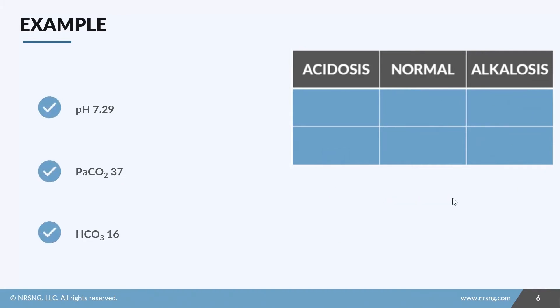Step one, pH of 7.29, it's acidotic. CO2 of 37, that's normal. Bicarb of 16. Well, bicarb equals base. So a low bicarb is acidotic. All right. Step two, what's my source? Boom. Metabolic acidosis. And again, let's look at step three, compensation. It requires that both of these values are abnormal and we know it's not. So right away we can say it's uncompensated. That's it.